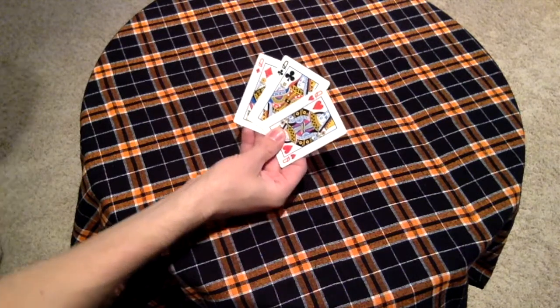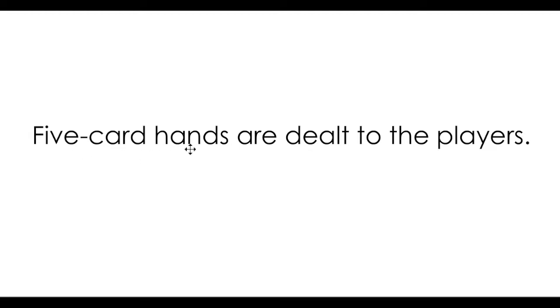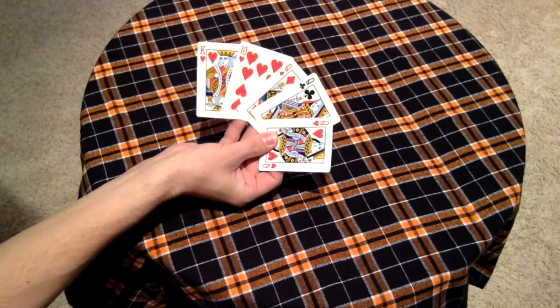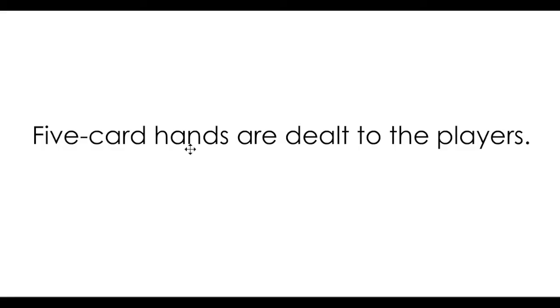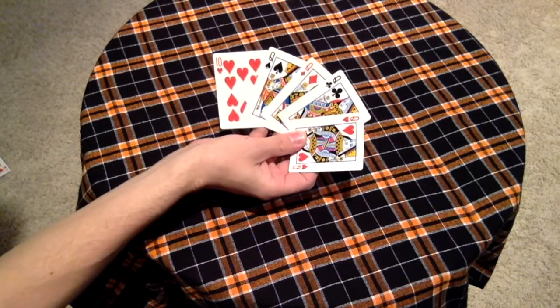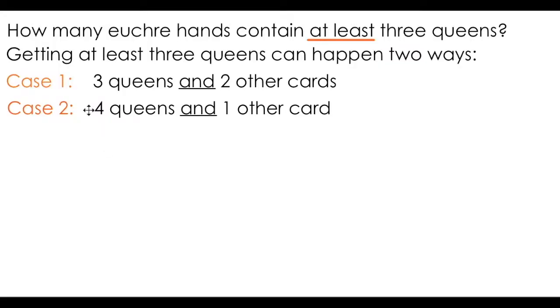We need to ask ourselves how many ways we can get at least three queens. With some thought, you should see that it can happen in two ways. The first case is we get the minimum number of queens, three, and two other cards. The second case is that I have four queens and one other card. If four of them are queens, the remaining card must not be a queen. I know that these are the only two possible cases, because remember that there are only a total of four queens in this game. Therefore, the maximum number of queens I can have is four. And since I need at least three queens, I can conclude that these are the only two cases where this can happen.